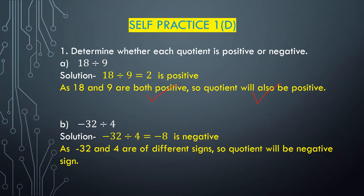Part B: minus 32 divided by 4 equals minus 8. Minus 32 is a negative integer and 4 is a positive integer. When a negative integer is divided by a positive integer, we get a negative integer. So the quotient will be negative. When dividing integers of different signs, the quotient will always be negative.